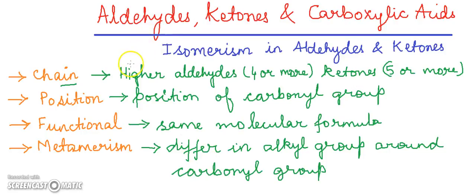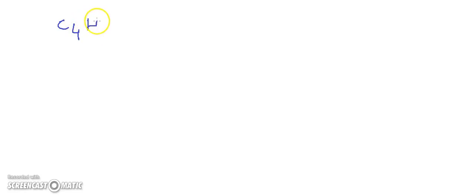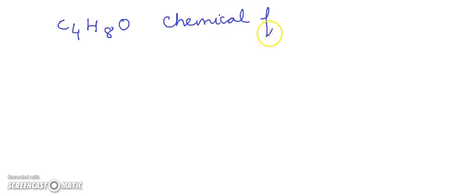We will understand more about isomerism in aldehydes and ketones with examples. In chain isomerism, we have a difference in the chain of the carbon atoms for higher aldehydes and ketones. For example, we have the chemical formula C4H8O, and we will see the isomers for the aldehydes and ketones.